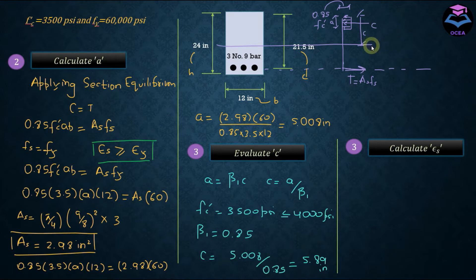So first let's draw the strain diagram for that. This should be a straight line. As I mentioned earlier, epsilon cu according to ACI code is equal to 0.003, and this is epsilon s. We know the value of C.